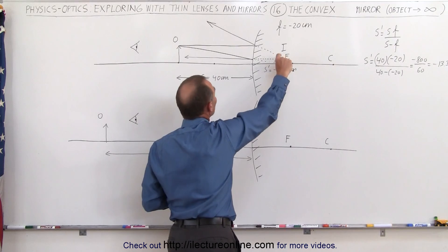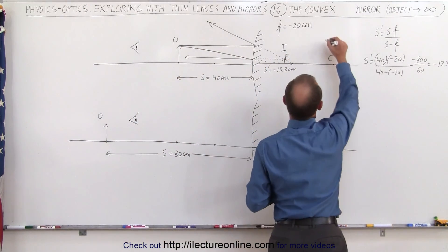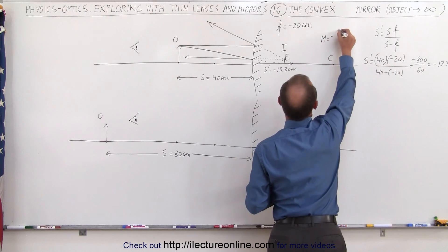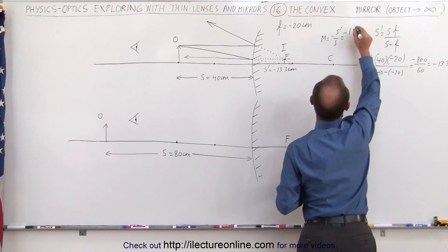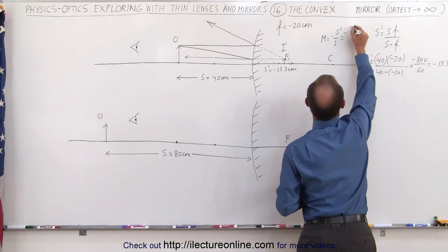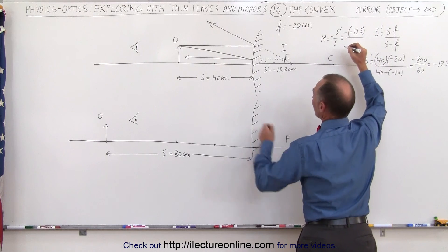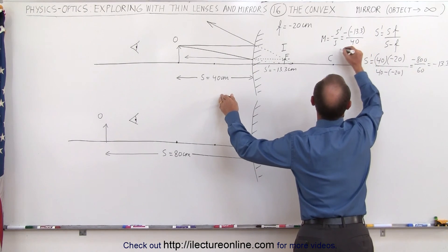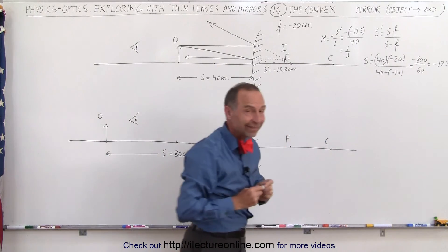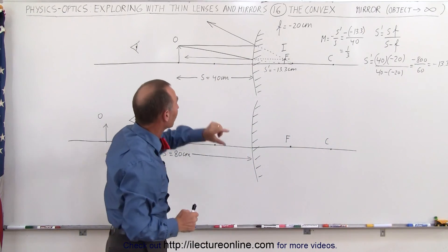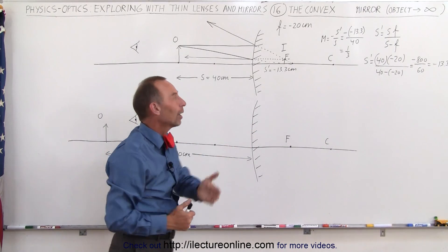It does appear as if the image is smaller than the object — let's find out how small. The magnification equals minus S prime over S, which is minus times 13.3 divided by 40, equal to positive one-third. That means the image is only one-third the size of the original object. Positive means that it's upright.